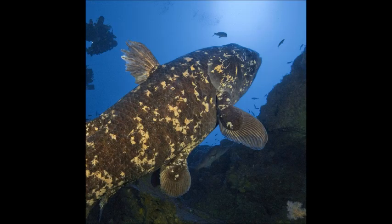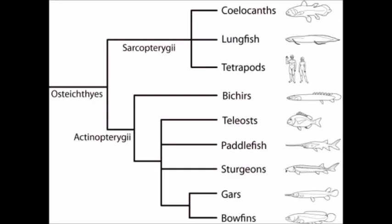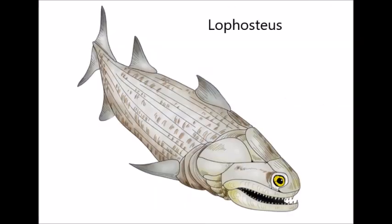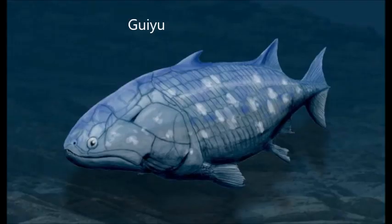Second, coelacanths have an evolutionary history that is frequently ignored by creationists. Coelacanths are members of the clade Osteichthyes, the bony fish, which is divided into the branches Actinopterygii, ray-finned fish, and Sarcopterygii, lobe-finned fish. Preceding the split between these fish, which occurred about 430 million years ago, are some stem osteichthyes like Lophosteus, and occurring just after the split there are stem sarcopterygians like Guiyu. We discuss this transition in new kinds.